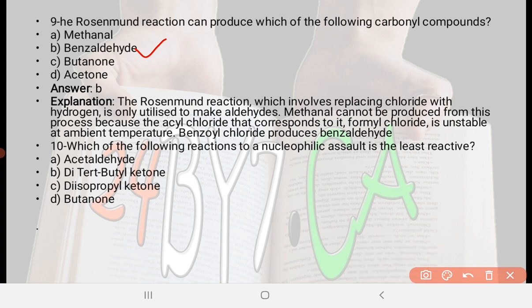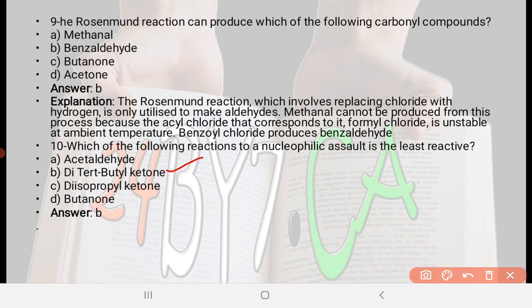Next: Which of the following is the least reactive towards a nucleophilic assault? Option A: acetaldehyde, option B: di-tert-butyl ketone, option C: diisopropyl ketone, option D: butanone. The right answer is option B, di-tert-butyl ketone. The least reactive towards a nucleophilic assault is di-tert-butyl ketone.